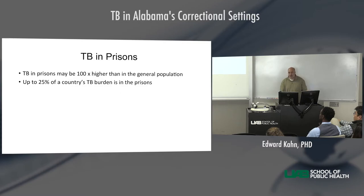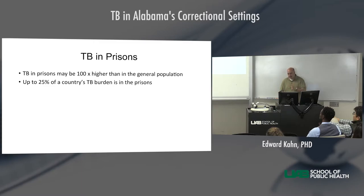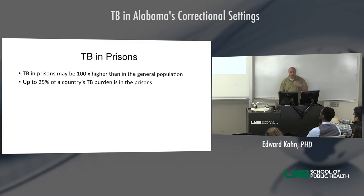To segue into TB in prisons: TB in prisons may be 100 times higher than in the general population, and up to 25% of a country's TB burden can be in the prison system. Prisons have been called amplification centers of TB — someone goes there, gets TB, it's transmitted around, then they're released into the community and TB spreads there. There's a lot of work focused on treating TB in prisons to thereby decrease spread into the community.